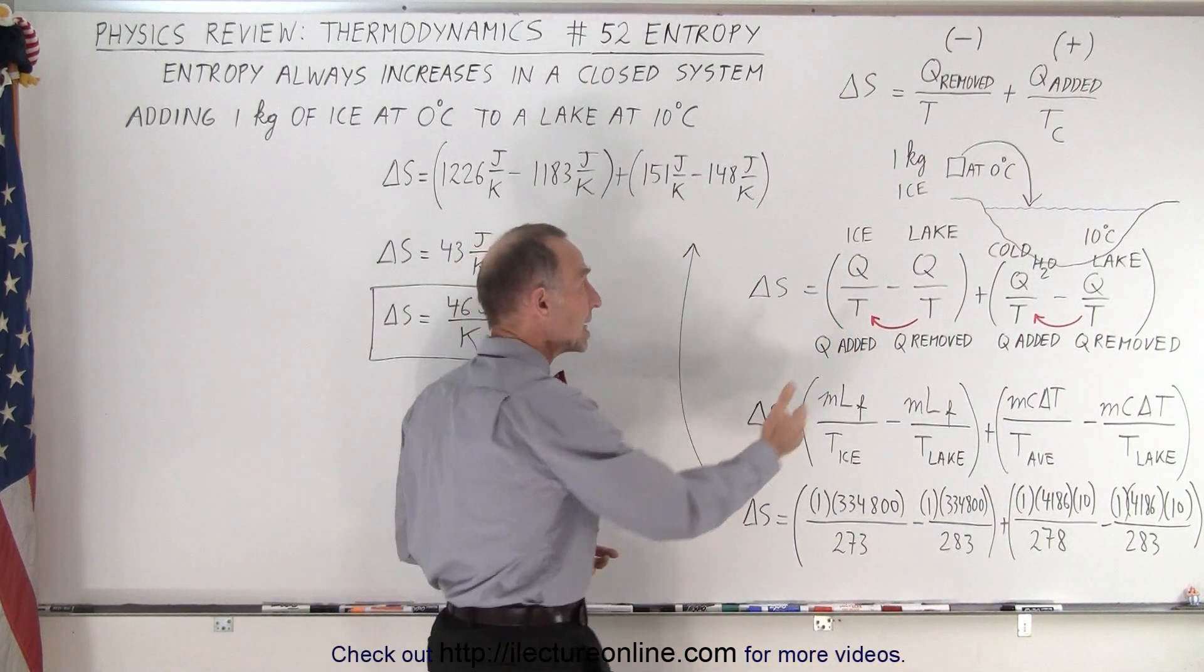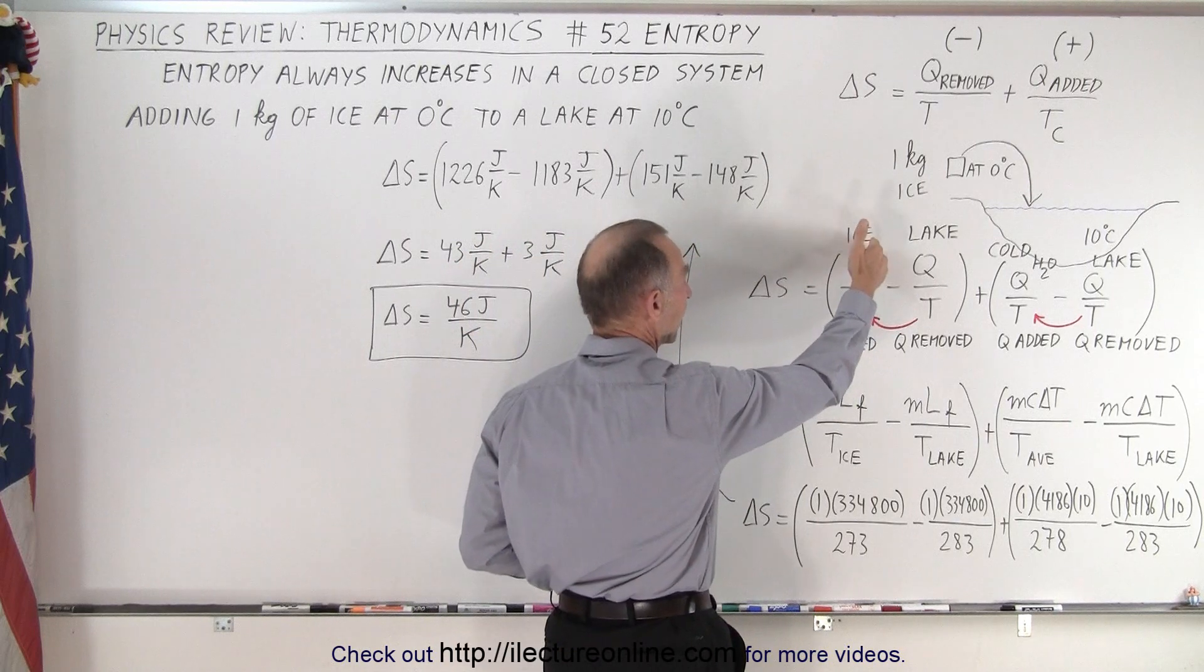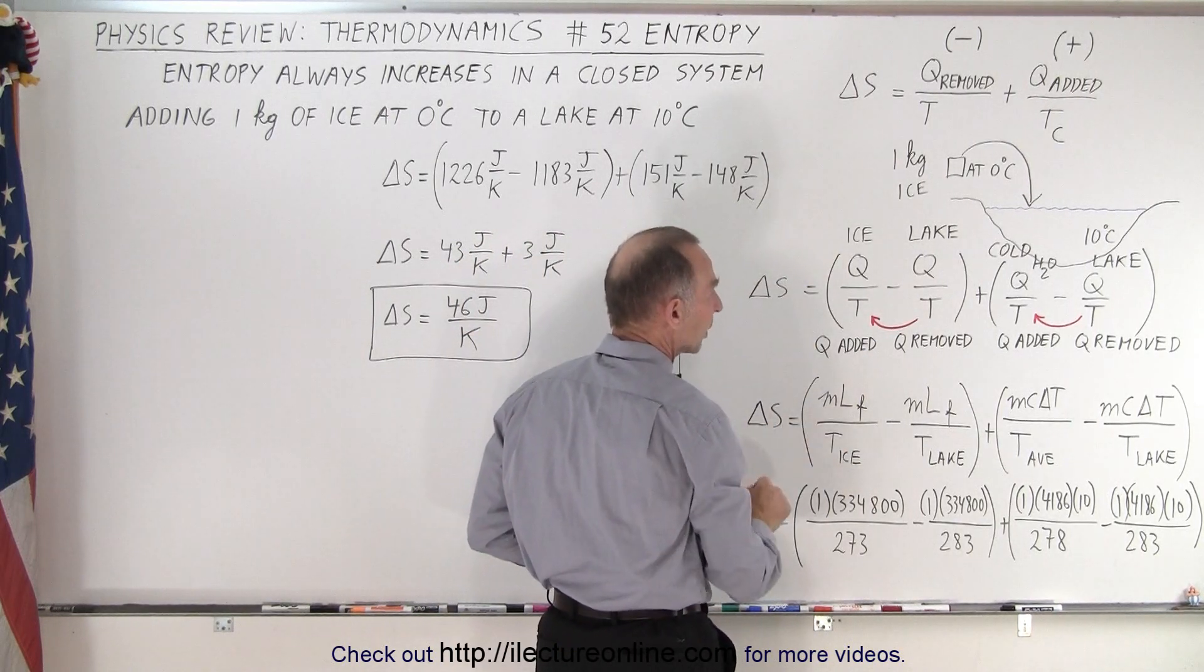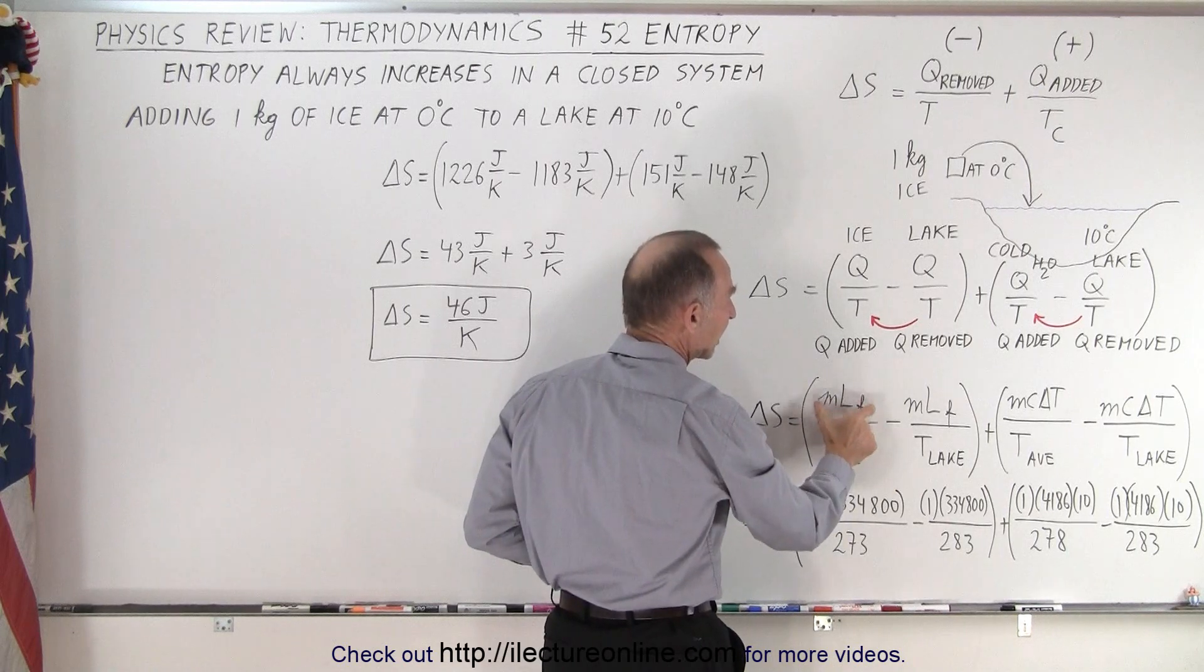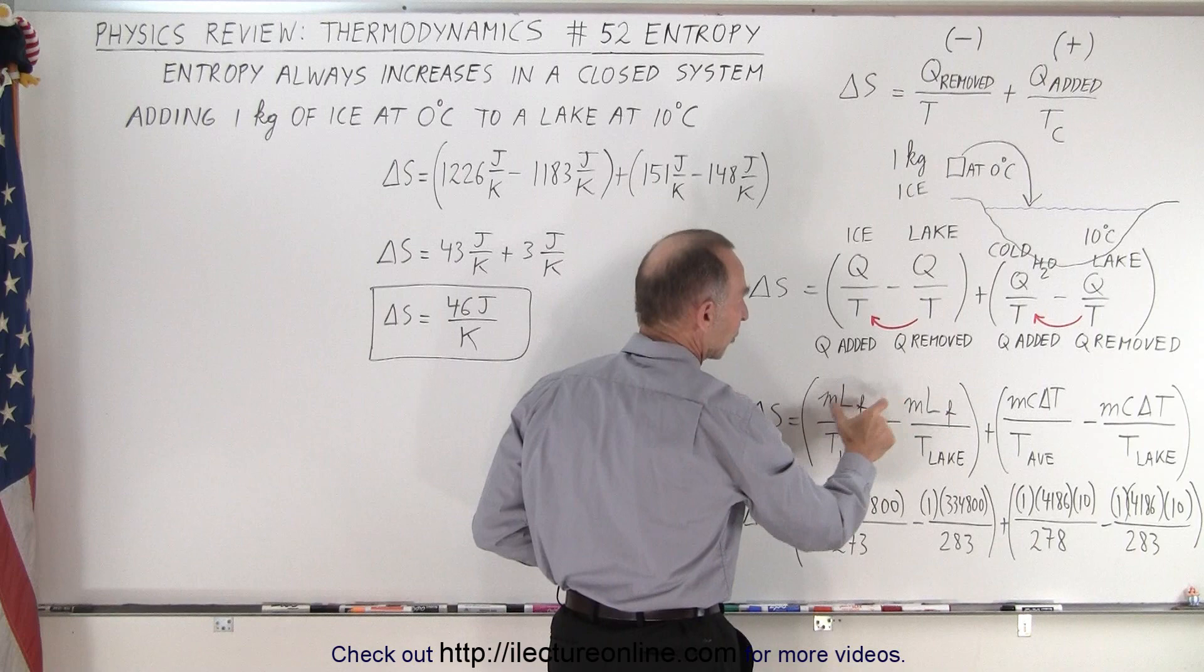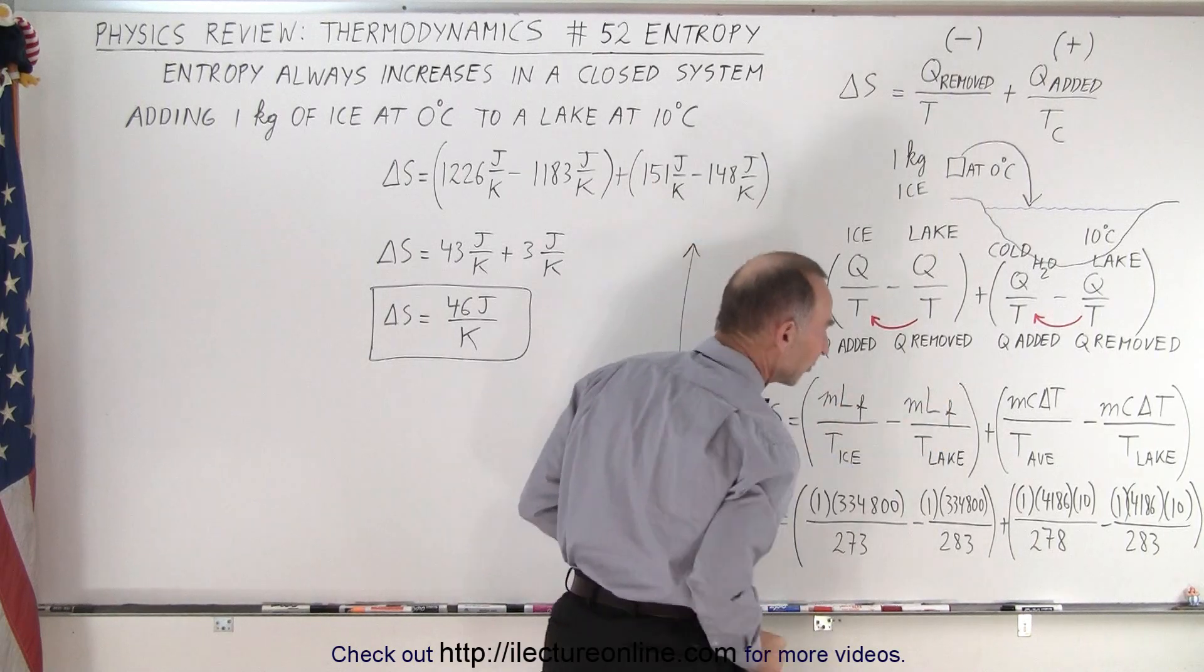So what happens now is that the heat that is necessary to melt the ice is the mass of the ice times the latent heat of fusion. The same amount of heat that the ice receives to melt is the amount of heat that it gets from the lake. So we put ML sub F, the mass times the latent heat of fusion for the ice,